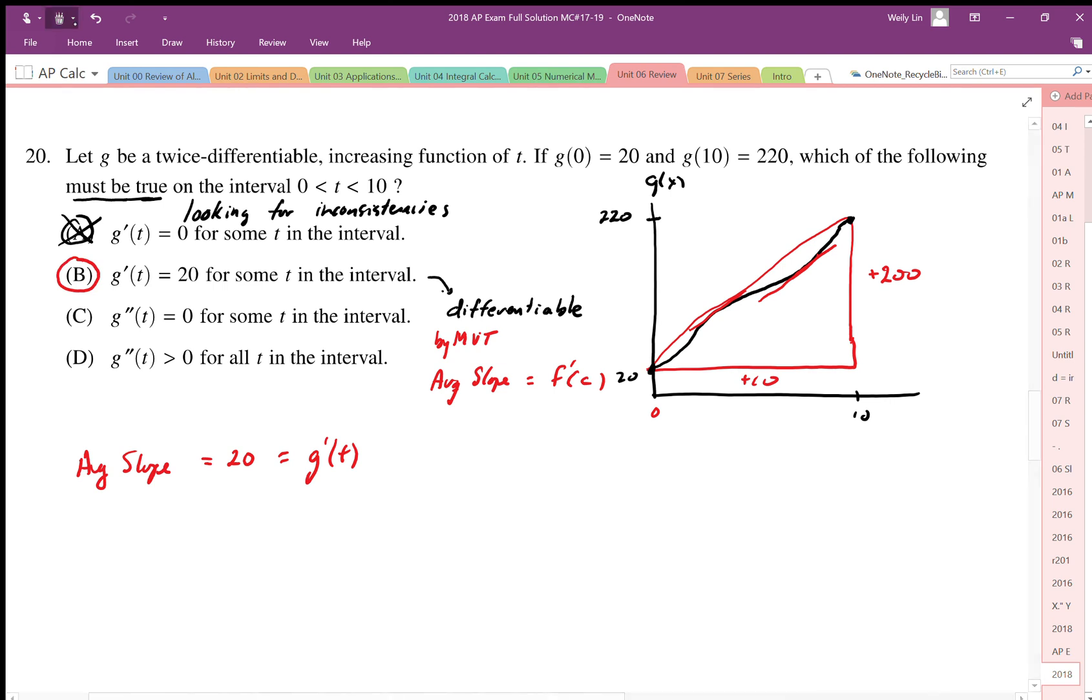C we can rule out because it says the second derivative equals zero, that means there must be an inflection. But I could easily draw an example where this is strictly increasing but has no inflection. So we can rule out C.